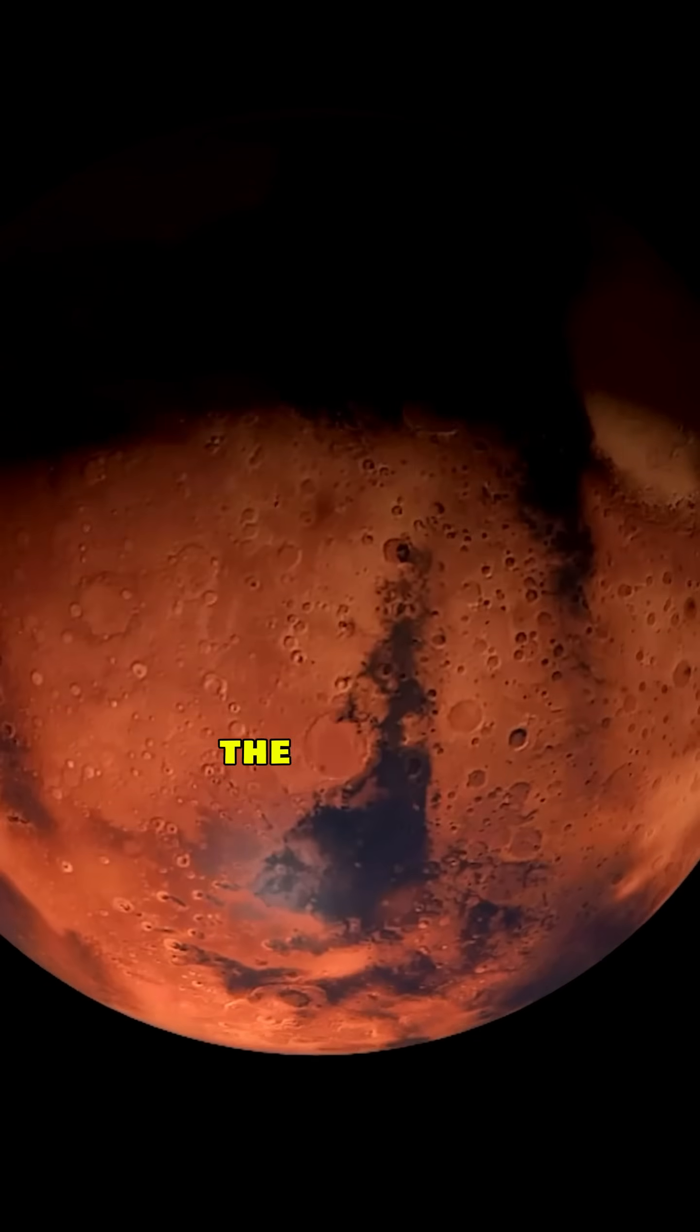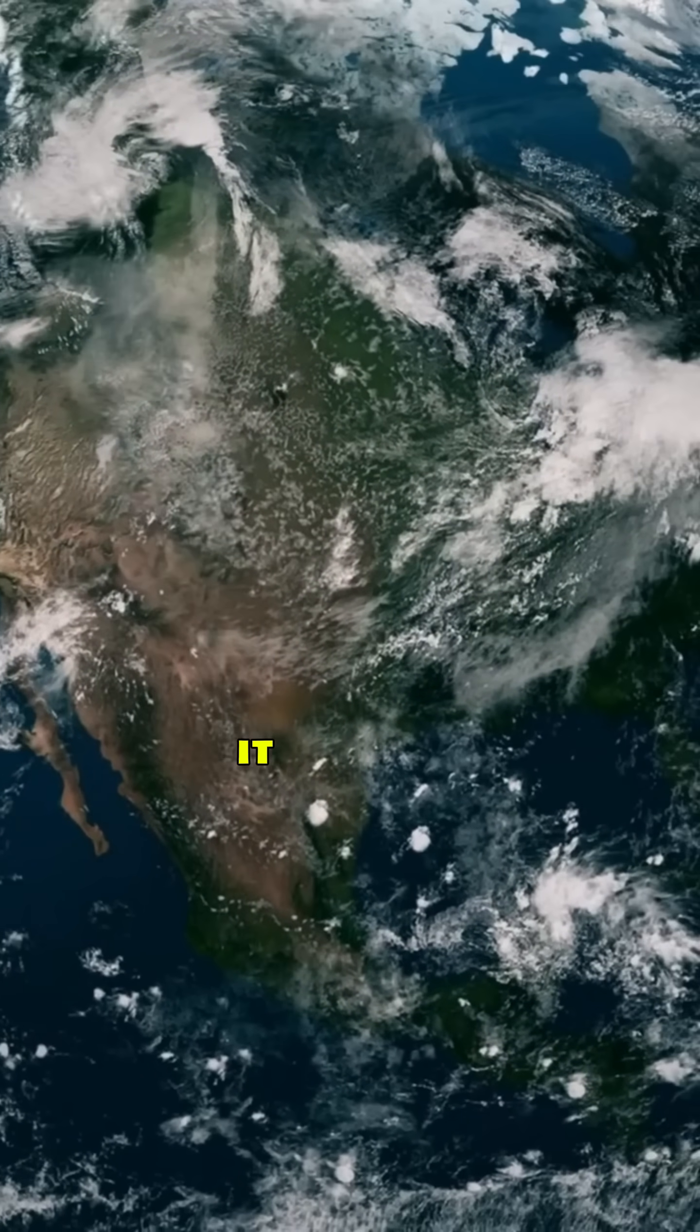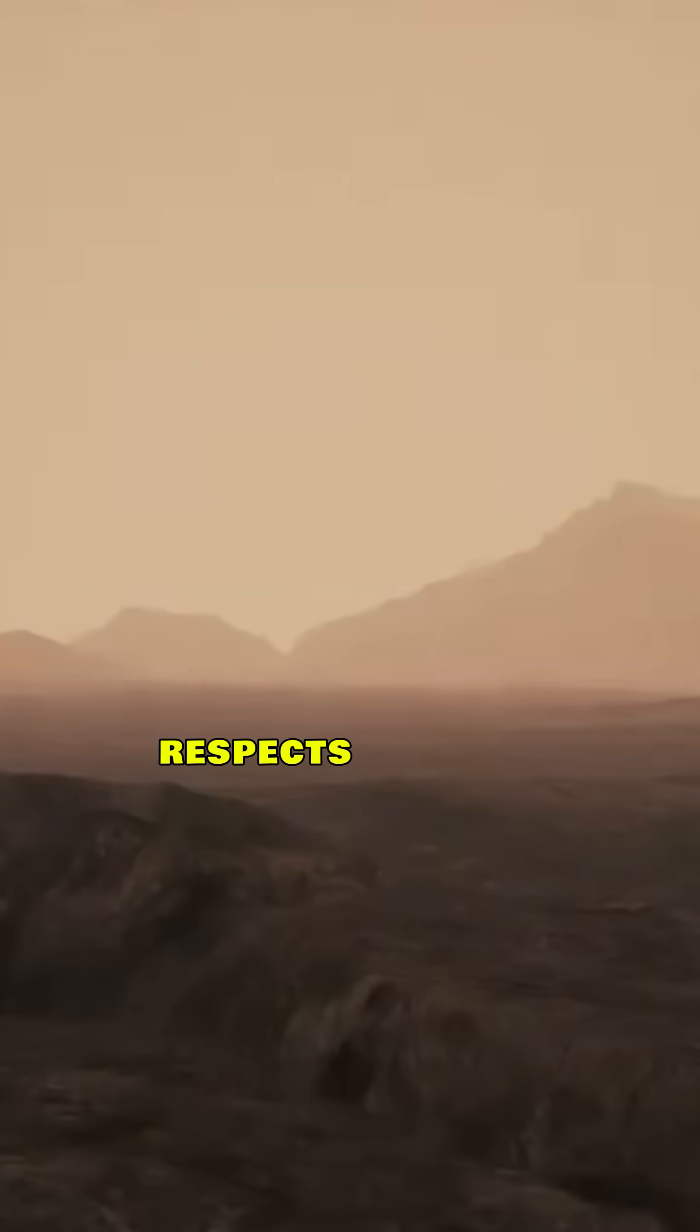This is the greenhouse effect of Venus. It's the nearest planet, a planet about the same mass, radius, density as the Earth, but it is spectacularly different in several respects.